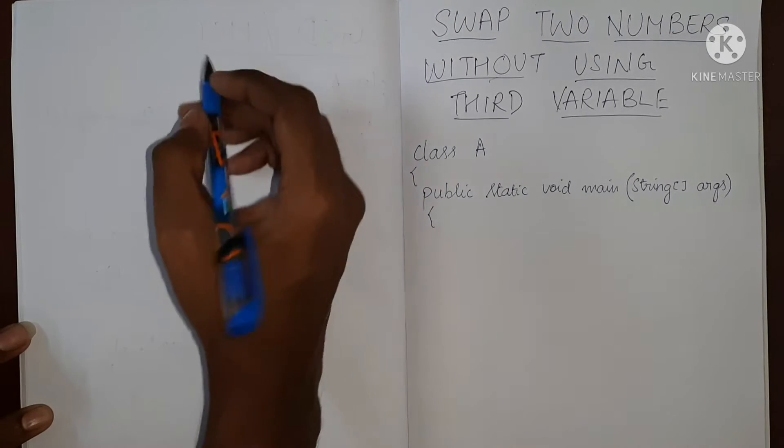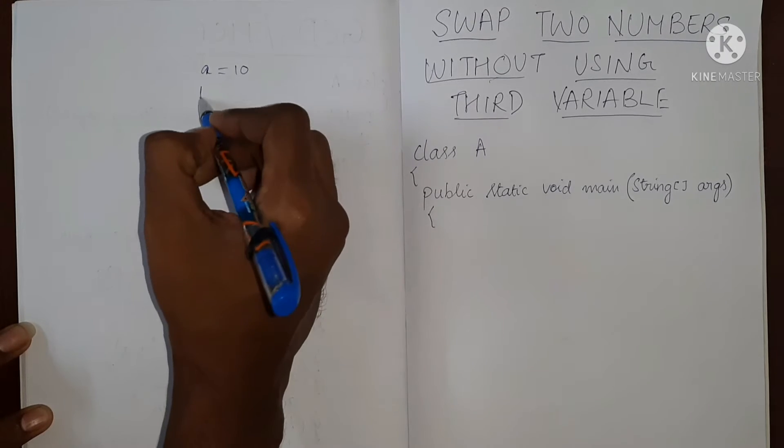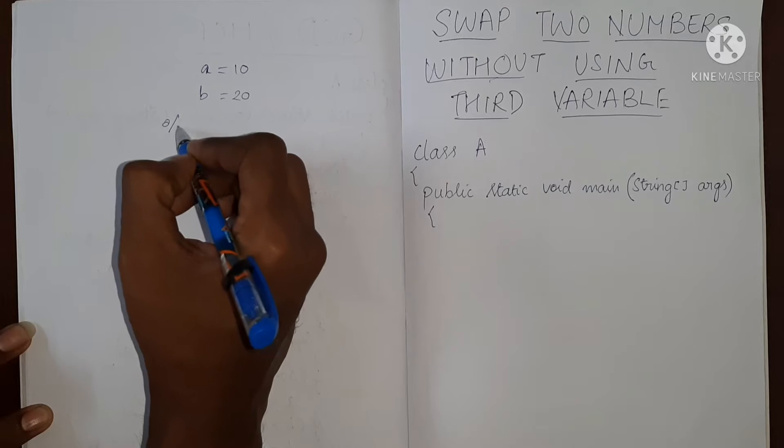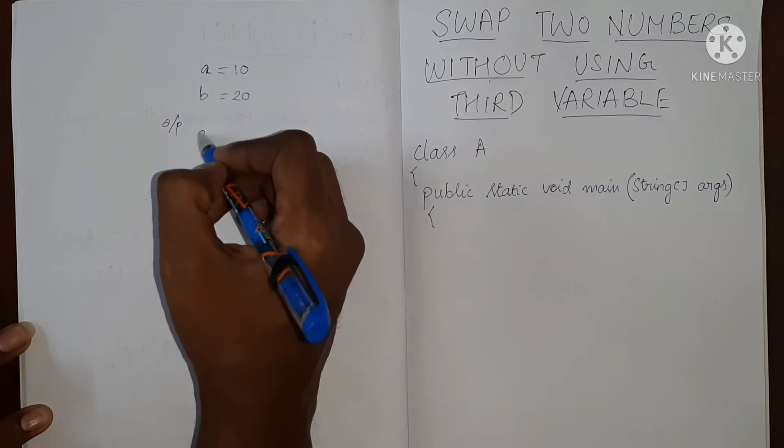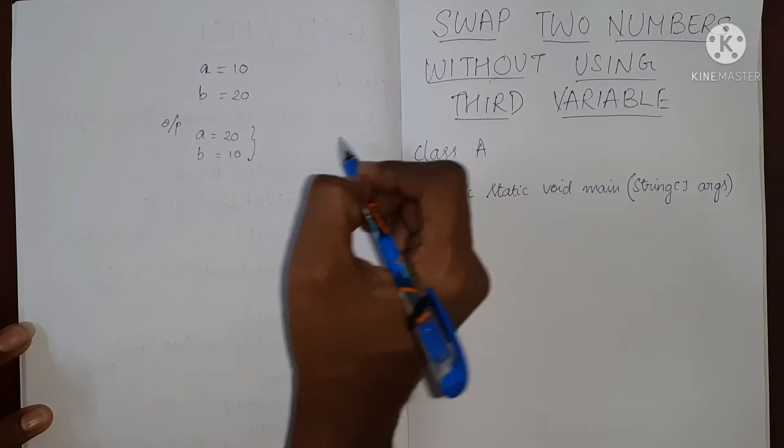So our objective here is, let's say we have a equal to 10 and b equal to 20, our output should be a as 20 and b as 10. So this is our objective.